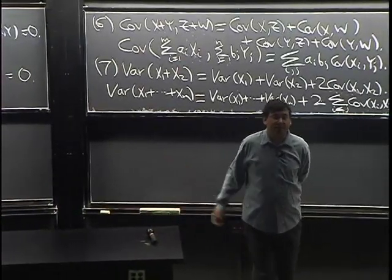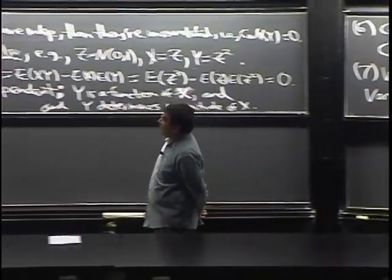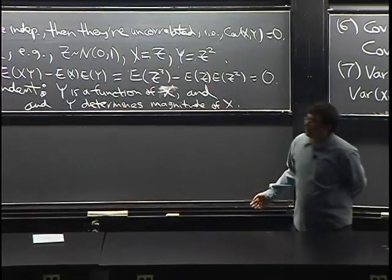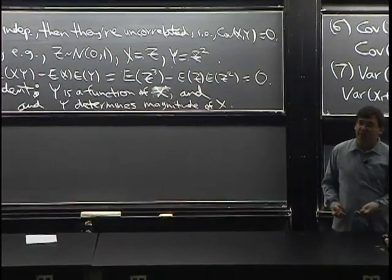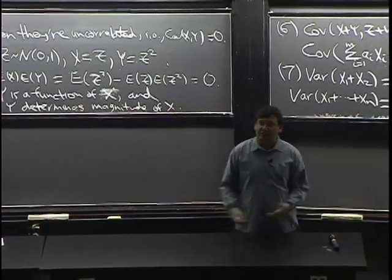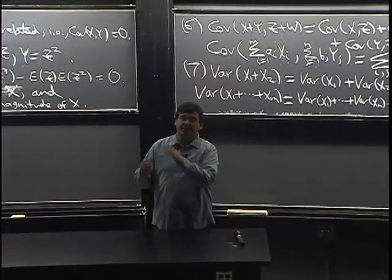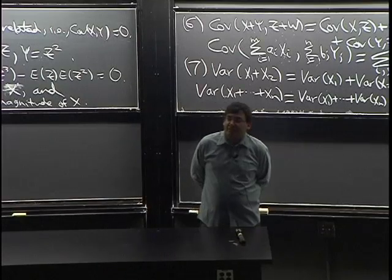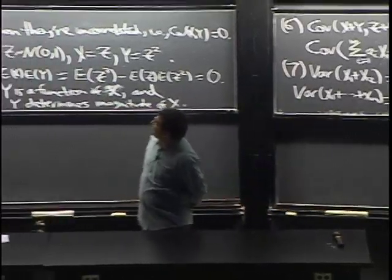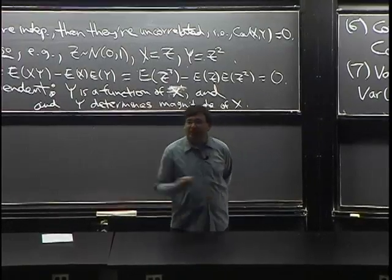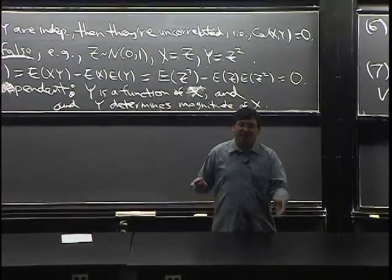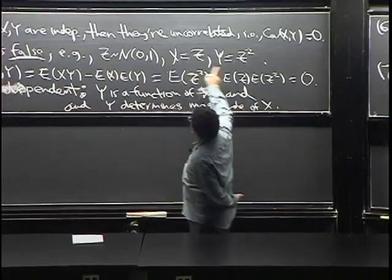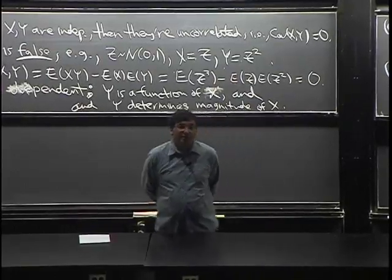There's a theorem we won't prove that says: if every function of X is uncorrelated with every function of Y, then they're independent. But just having the variables themselves be uncorrelated (a linear condition) is not enough — as this example shows, because they have a quadratic relationship but no linear relationship.